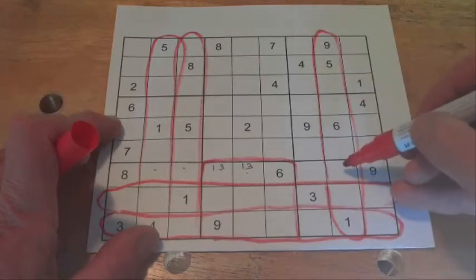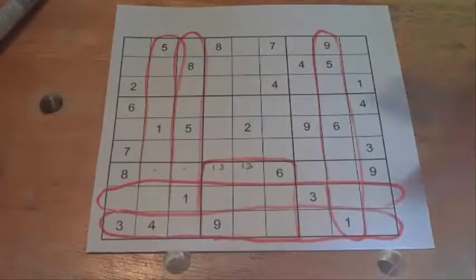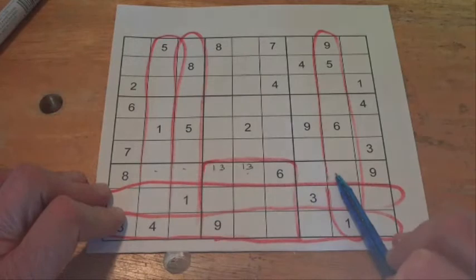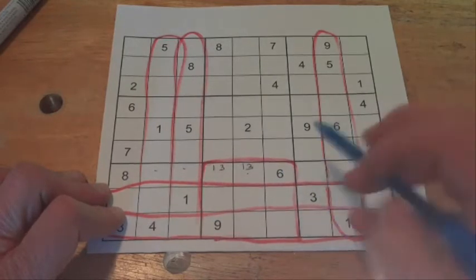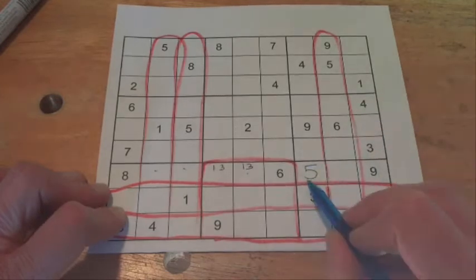And that stops a 5 appearing there. So if we have a look along that row, the only spare cell then is that one there to have a 5.